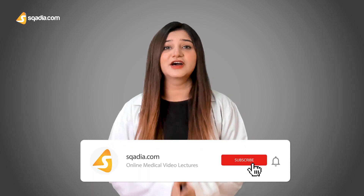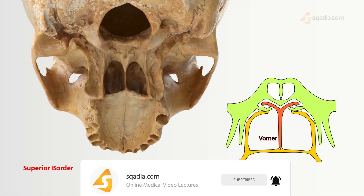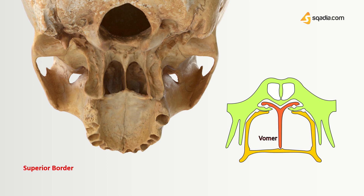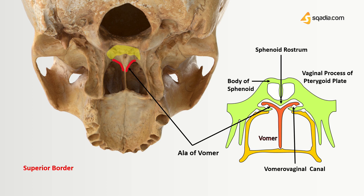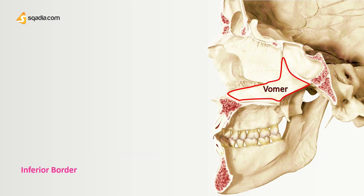The perpendicular plate of the Vomer is a thin vertical sheet of bone on the midline below the wings. Now let's discuss the borders of the Vomer bone. The superior border is thick and is grooved between the two diverging alae; the groove fits over the sphenoidal rostrum. The margin of the alae intervenes between the body of the sphenoid and the vaginal process of the medial pterygoid plate. The vomerovaginal canal is formed between the alae of the Vomer and the vaginal process of the medial pterygoid plate. The inferior border articulates with the nasal crest formed by the maxilla and palatine bones of the two sides.